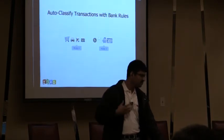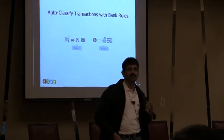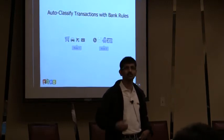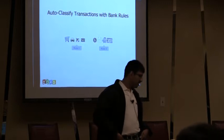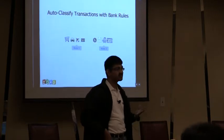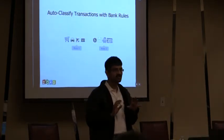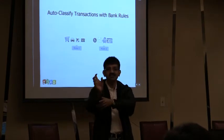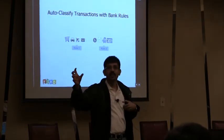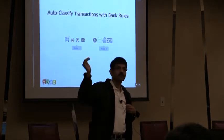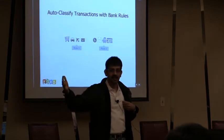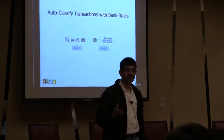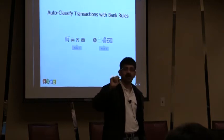We had customers write from day one when we launched asking why they needed to input transactions manually, and they're right — it's a pain. And it even gets better: you can actually auto-classify these transactions. You can set up rules saying that if the description has something like 'Starbucks,' automatically classify that as meals or entertainment expense. Or if it has a description like 'Southwest,' classify that as a travel expense. With bank rules, you can auto-classify the transactions.